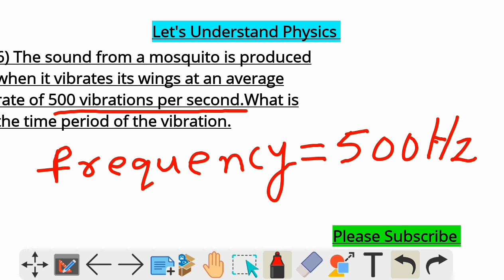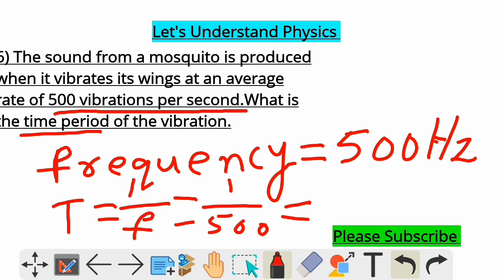Now, find time period. What is the time period of the vibration? T is equal to 1 by F. 1 by frequency. In formula, we have learned. Directly, I am substituting 1 by F is 500 is equal to 1 by 500. You can leave like that. Otherwise, just simplify and write 1 by 500 is equal to 0.002. What is the unit? Second because it is time period. So, these are the solutions for these two questions.